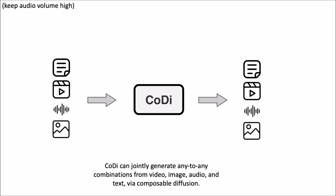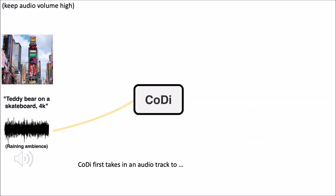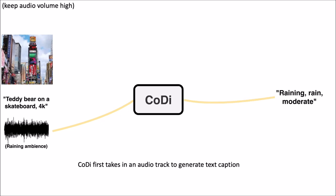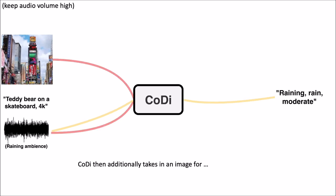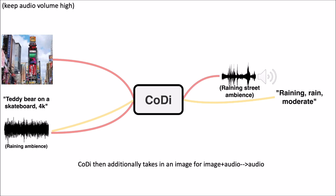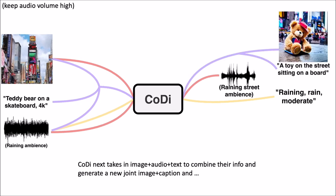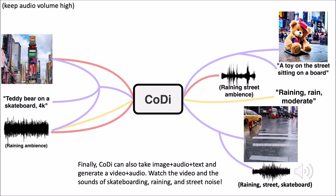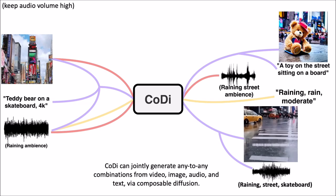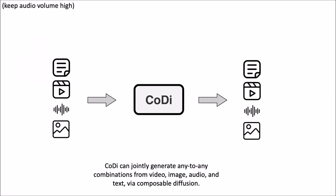Diffusion models are a type of generative model that can learn to refine samples by applying a series of steps to initial noisy inputs. This process allows the models to generate high-quality data samples through gradual improvements. Kodi builds upon this foundation of diffusion models to extend their capabilities to handle diverse different types of domains that are inputted into the application.